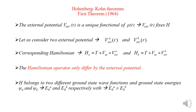Now we will see the Hohenberg-Kohn theorem. There are two theorems by Hohenberg and Kohn. We will see the first theorem. This theory was developed during 1964. Remember that the Thomas-Fermi theory was developed during 1927 itself, and this was developed during 1964.